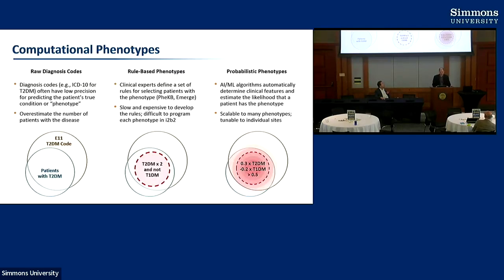The raw diagnosis codes in our electronic health record systems have lots of biases and data quality problems. They often have low precision for detecting a patient's true condition or phenotype. Half the patients who have a code for type 2 diabetes don't actually have that disease. As a result, you can overestimate the number of patients who have the disease.